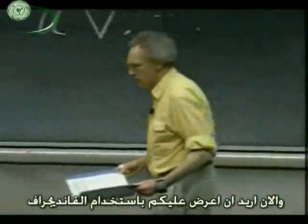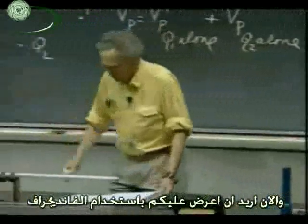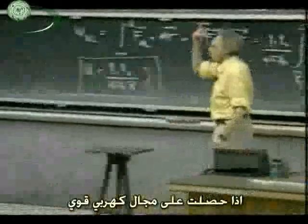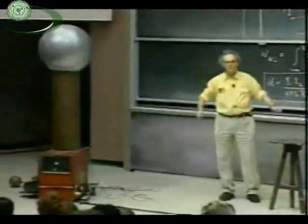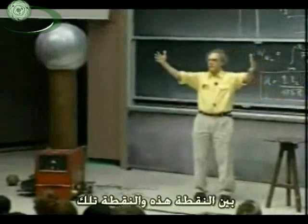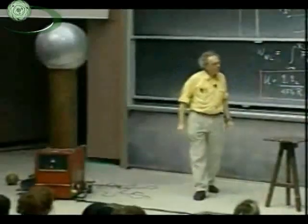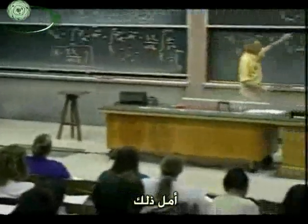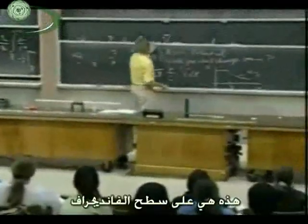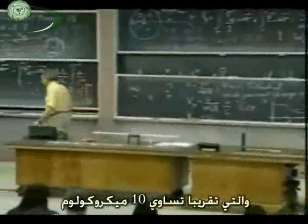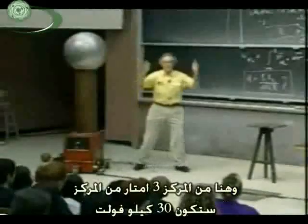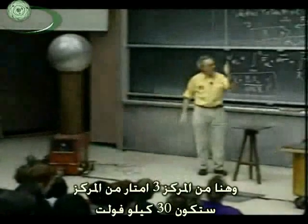Now I would like to demonstrate with the Van de Graaff that if you get a strong electric field radiating outwards from the Van de Graaff, you get a huge potential difference between points at different distances. At the surface of the Van de Graaff, which holds about 10 microcoulombs, it will be 300,000 volts. Here it would be 150,000 volts, and three meters from the center it's about 30 kilovolts.